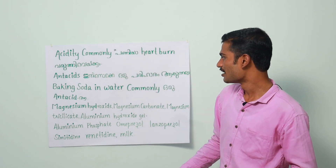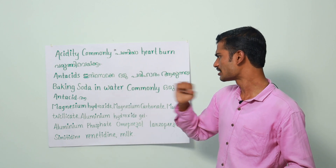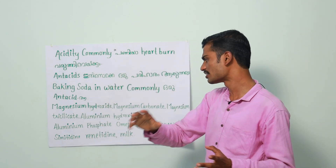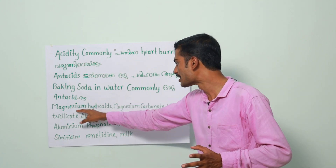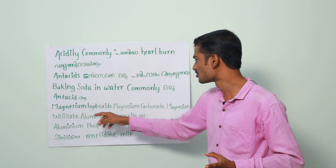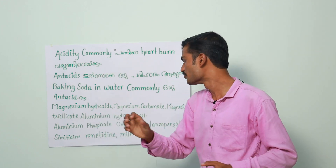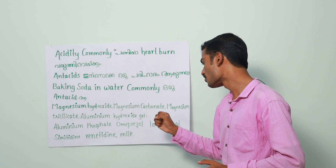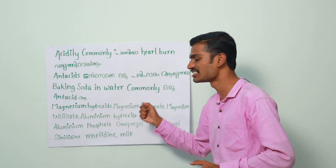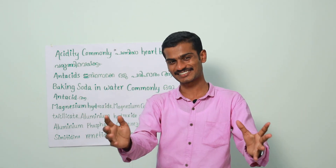I will tell you, we have baking soda water, like magnesium hydroxide, magnesium carbonate, magnesium trisilicate, aluminium hydroxide gel, aluminium phosphate, omeprazole, lansoprazole, cimetidine, ranitidine milk. All of these are antacids.